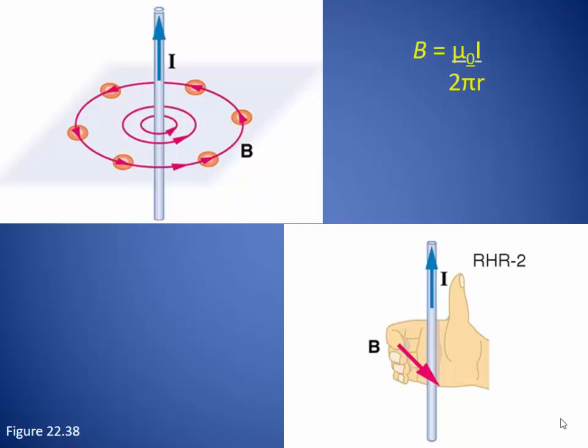The experiment has shown that the magnetic field produced by a long straight current-carrying wire is the current times the permittivity of free space divided by 2 pi times the shortest distance to the wire.